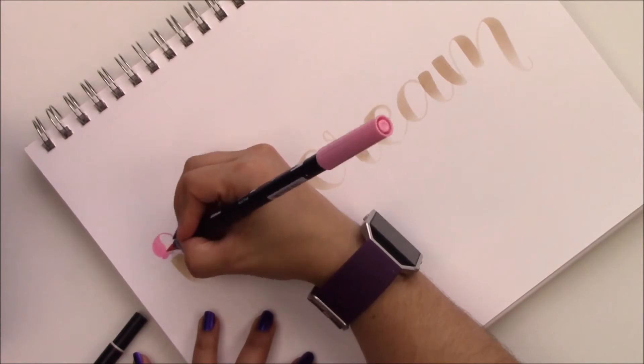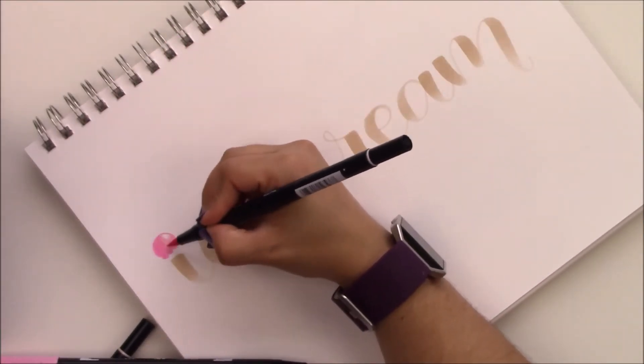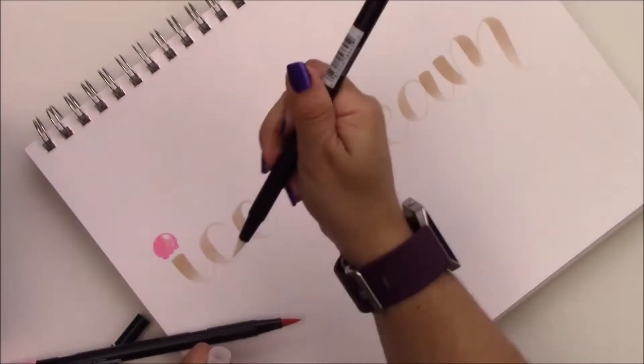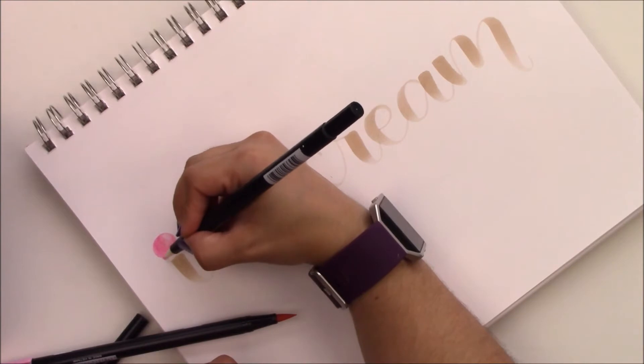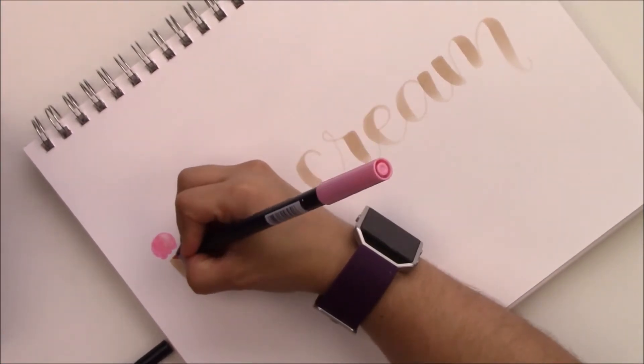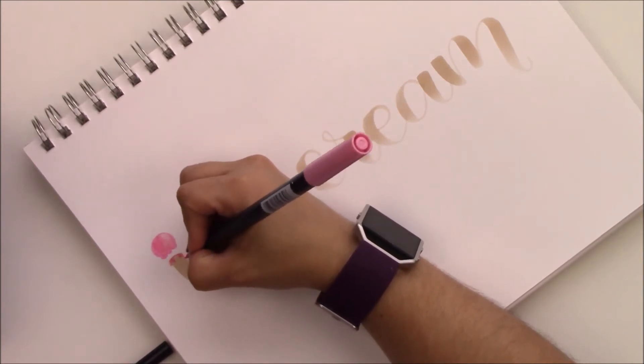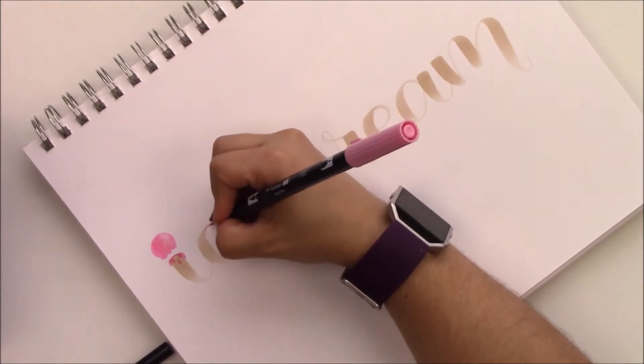I'm going to be using Tombow products for this whole piece. I use 723 to create the melted ice cream and the ice cream scoop. I also use the blender and a lighter pink to create one of the parts in the ice cream a little bit lighter. They blend pretty well so it was pretty easy.